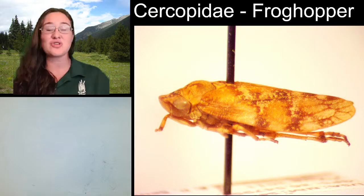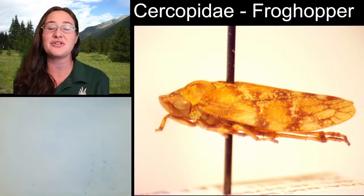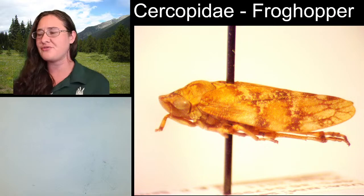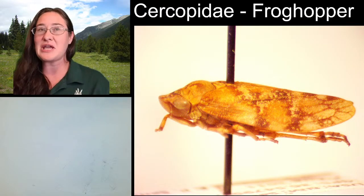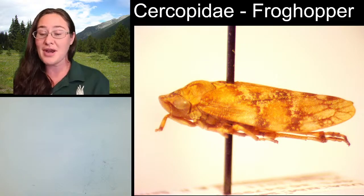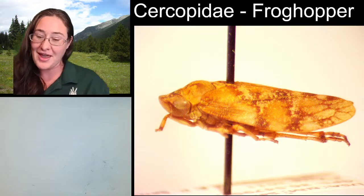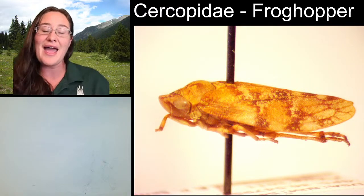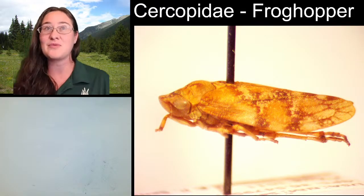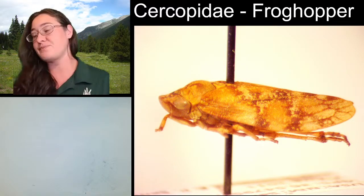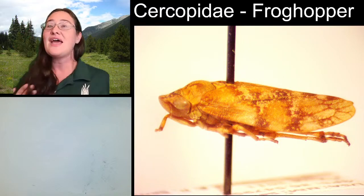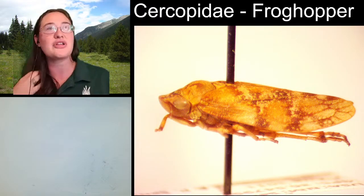Hello ladies and gentlemen, this is Trisha with Insectopia and we are here looking at a brand new insect to sketch. I actually have a couple of them in front of me right now. I was thinking we'd do a hopper of some sort. I do have the frog hopper underneath the microscope right now, but I also have a plant hopper, a tree hopper, and a leaf hopper sitting in front of me. Actually, I have three tree hoppers.